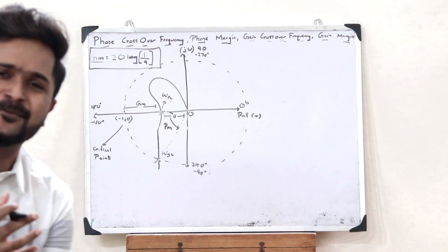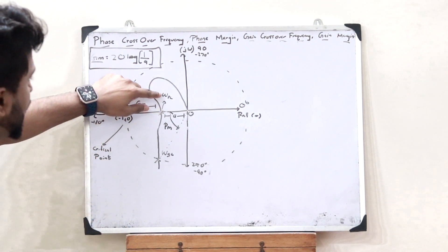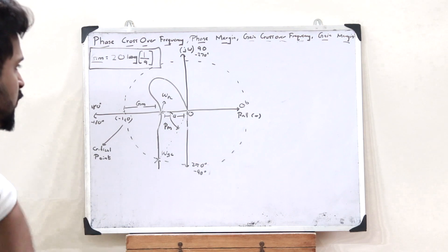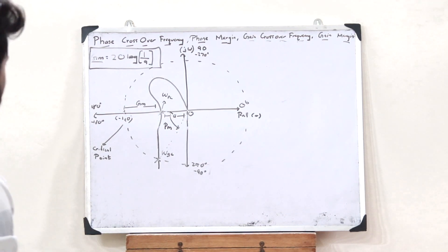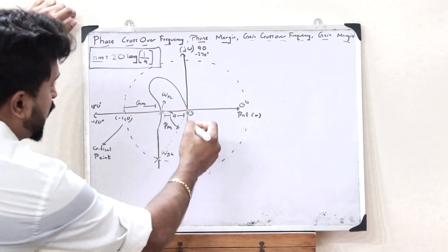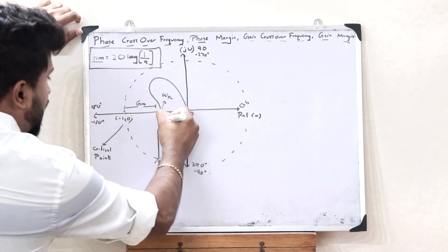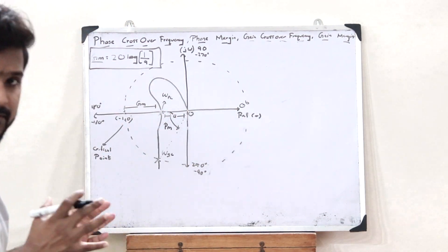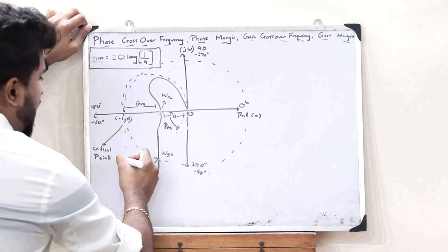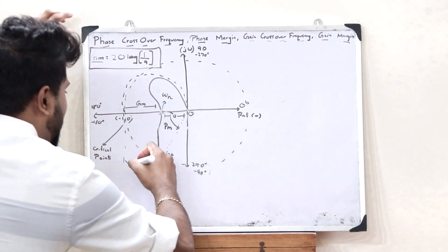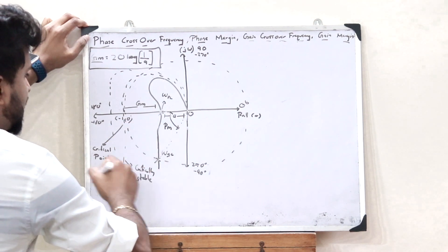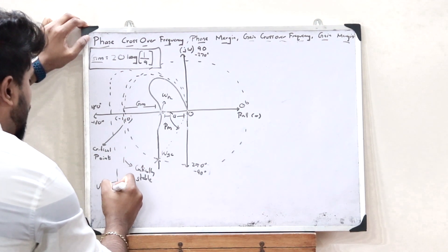So these are the basic elements of a polar plot: namely, the phase crossover frequency, the gain margin, the gain crossover frequency, and the phase margin. The interesting fact is that if this particular plot is within the critical point, it means the control system is a stable control system. If the plot is passing through the critical point, it is a critically stable control system. And if the plot is flowing outside the critical point, it is an unstable control system.